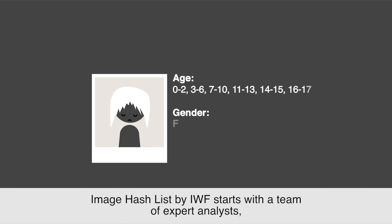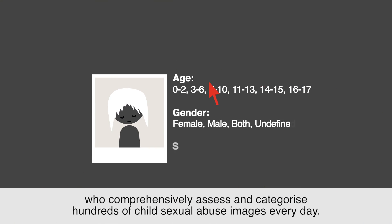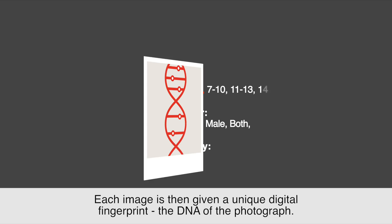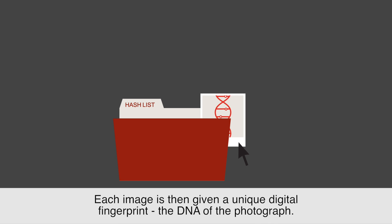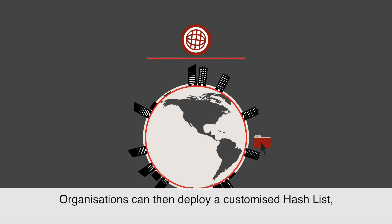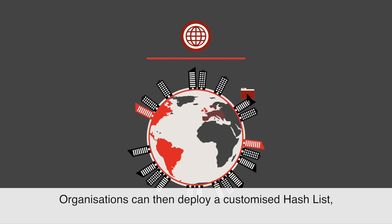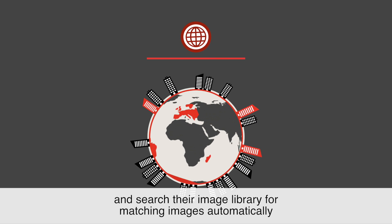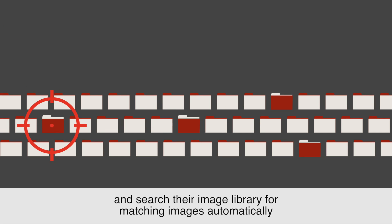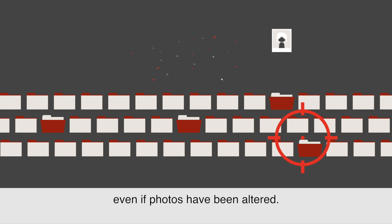Image Hash List by IWF starts with a team of expert analysts who comprehensively assess and categorize hundreds of child sexual abuse images every day. Each image is then given a unique digital fingerprint — the DNA of the photograph. Organizations can then deploy a customized hash list and search their image library for matching images automatically, even if photos have been altered.